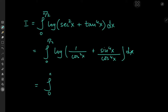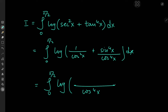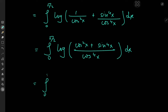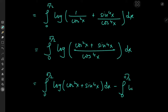So I can write this as the integral from 0 to π/2 of the logarithm of 1/cos²x plus sin⁴x divided by cos⁴x, dx. Some simplification gives the integral from 0 to π/2 of the logarithm of cos²x plus sin⁴x in the numerator and cos⁴x in the denominator. Using the properties of the natural logarithm, we can split this and write the exponent as a coefficient.